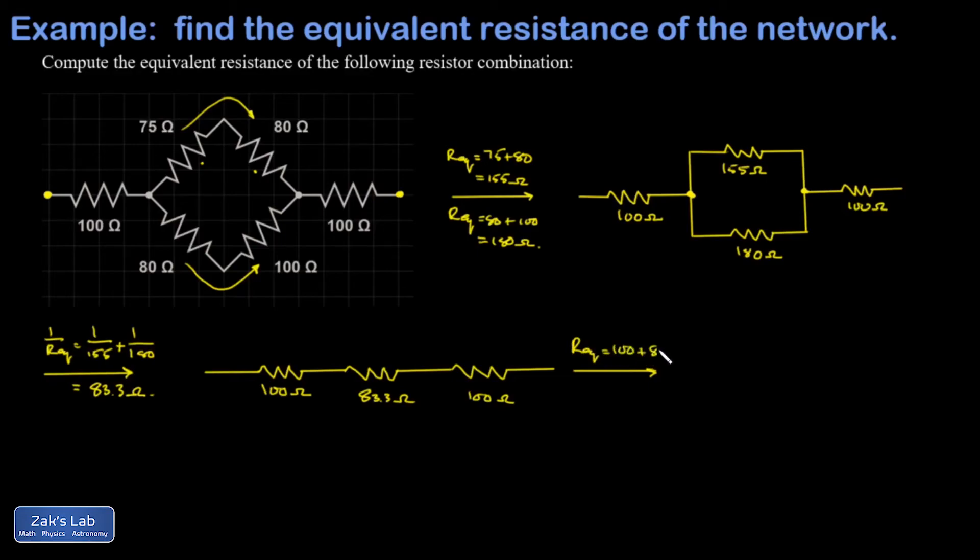Plus 83.3 ohms plus another 100 ohms, and I get 283.3 out of this, which is actually the answer to the question. But I'm going to draw the circuit one more time, and I'll go ahead and round to three sig figs. That's 283 ohms.